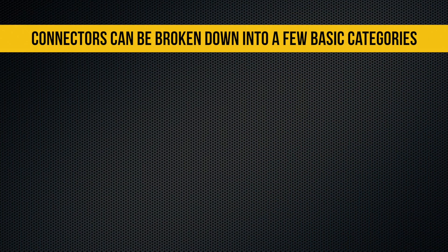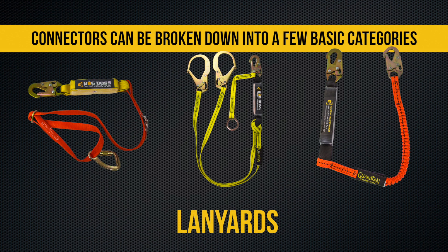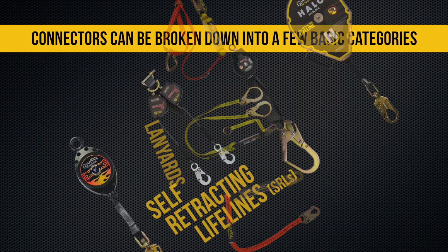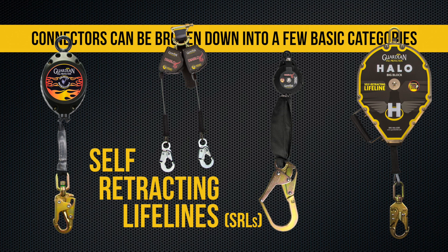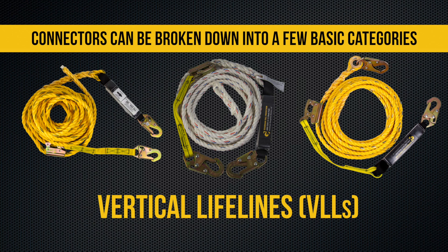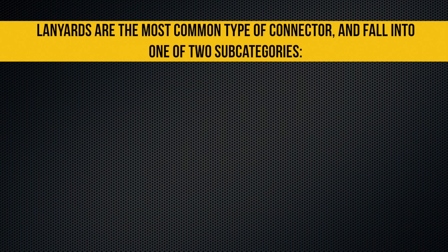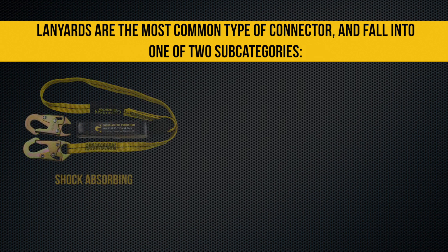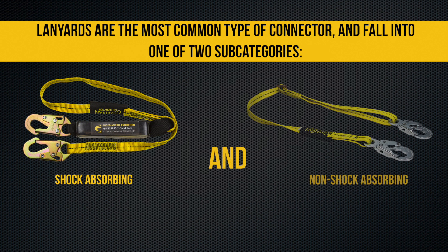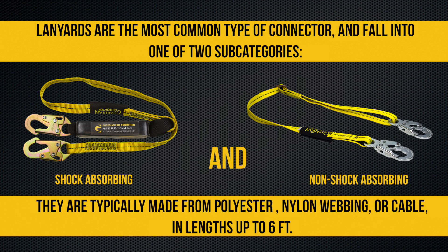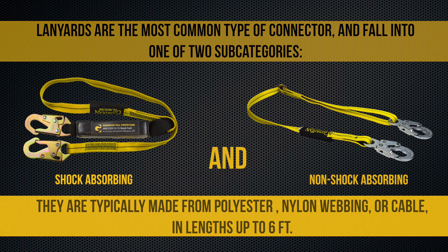Connectors can be broken down into a few basic categories: lanyards, self-retracting lifelines (also known as SRLs), and vertical lifelines. Lanyards are the most common type of connector and fall into one of two subcategories: shock absorbing and non-shock absorbing. They are typically made from polyester, nylon webbing, or cable in lengths up to six feet.